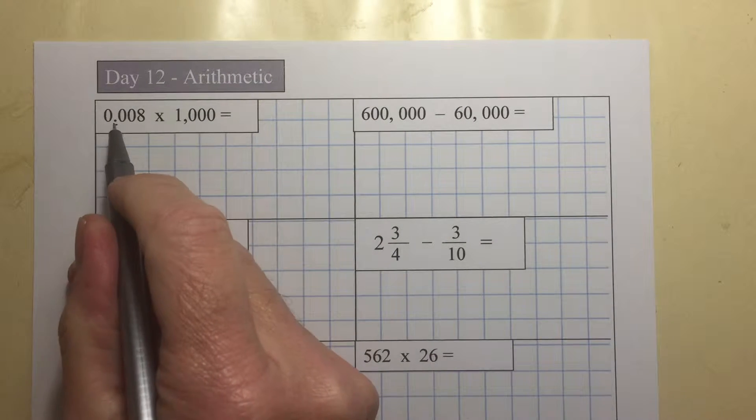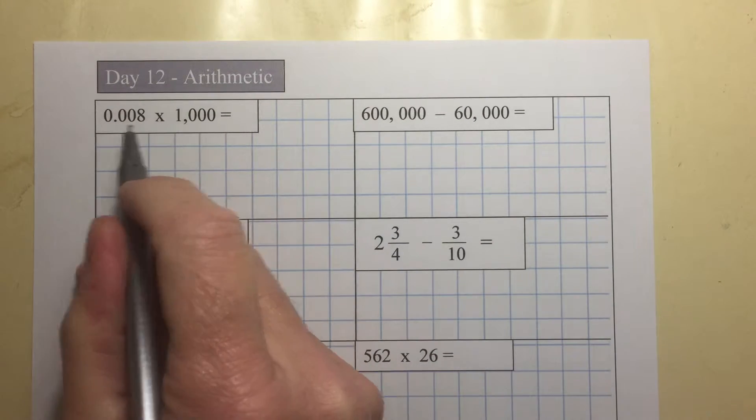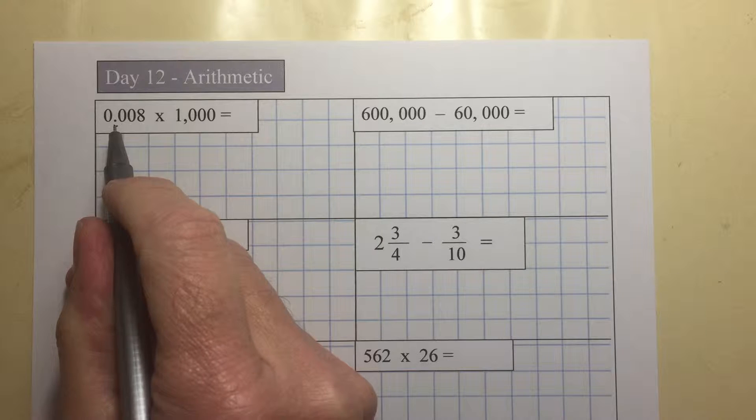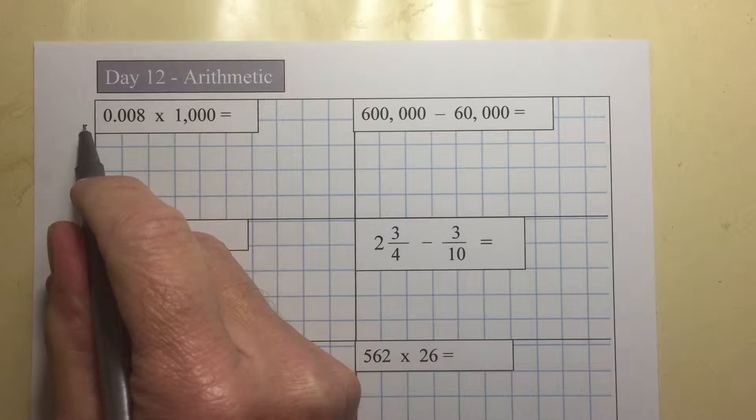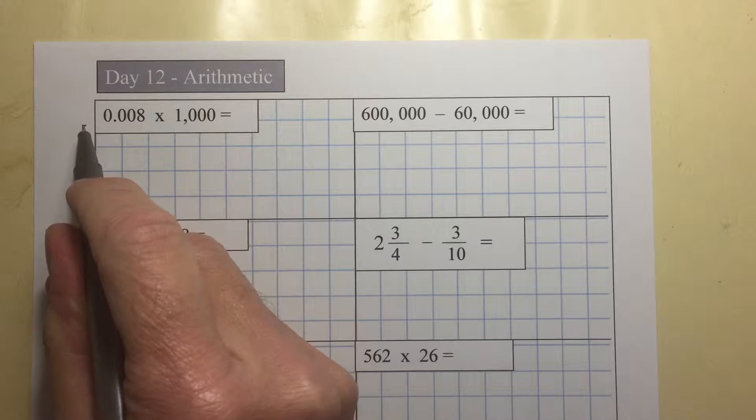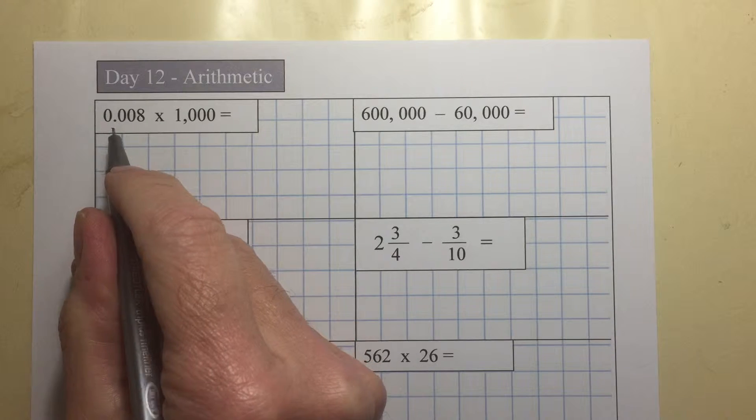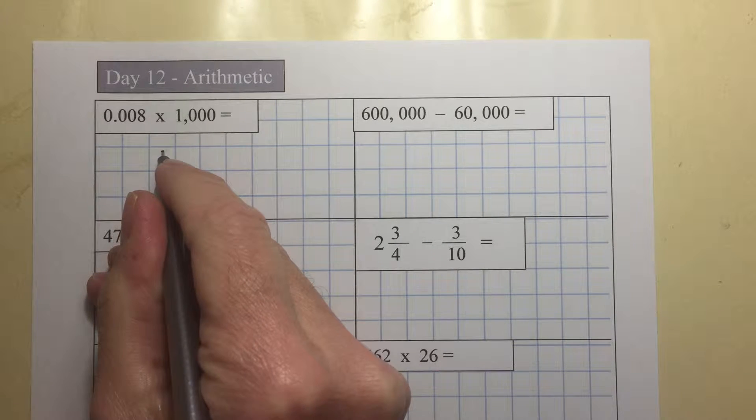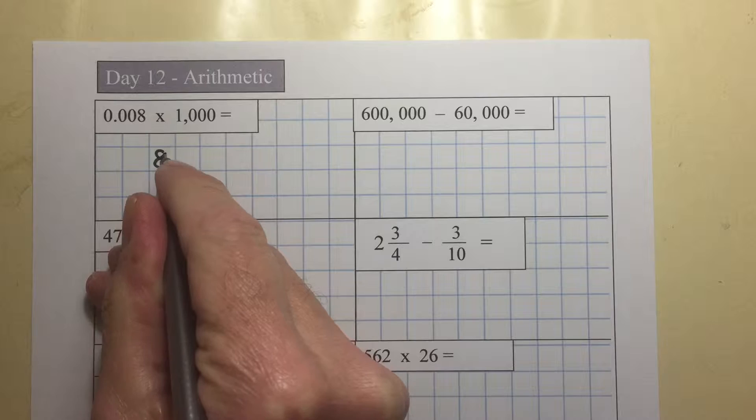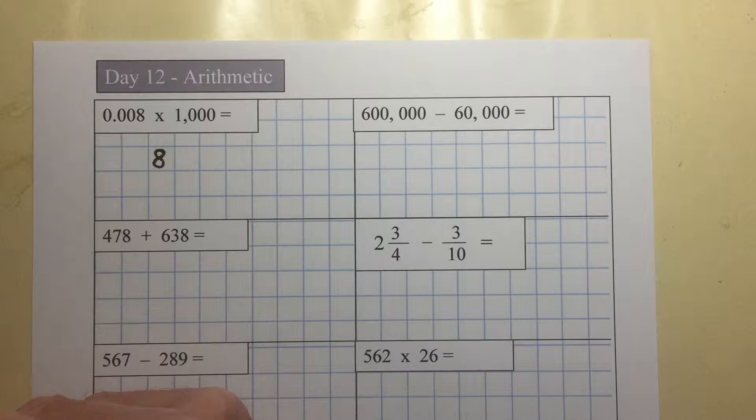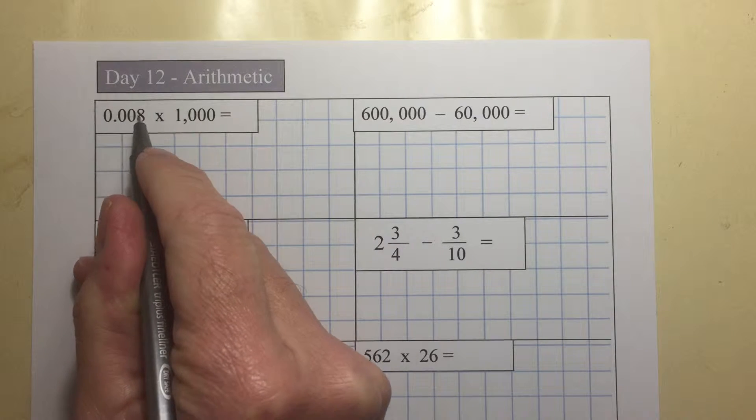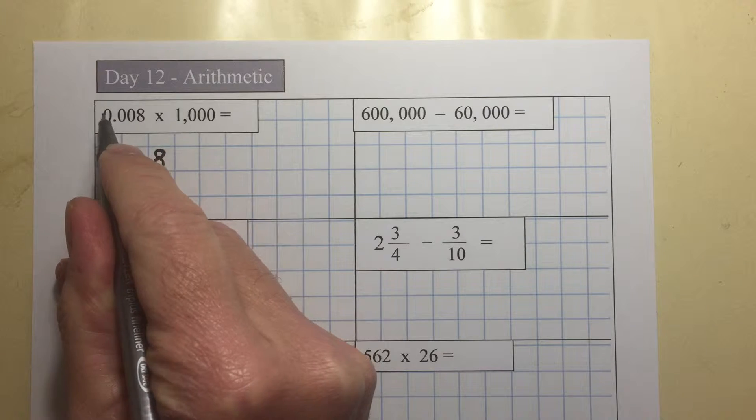0.008 times 1000. We've got to shift the digits 3 to the left. 1, 2, 3. So the answer is 8.